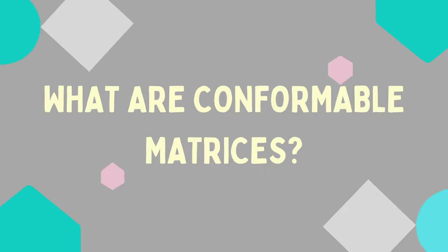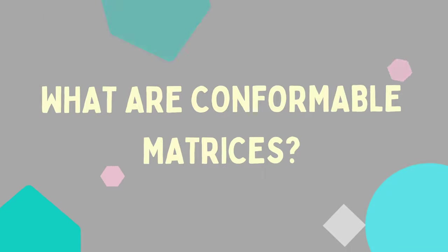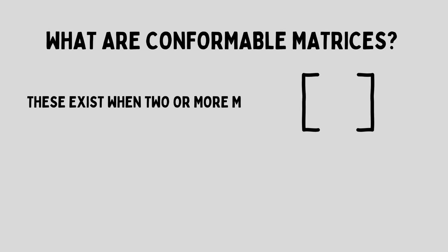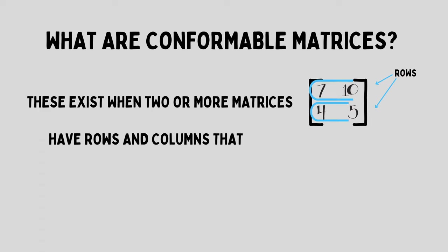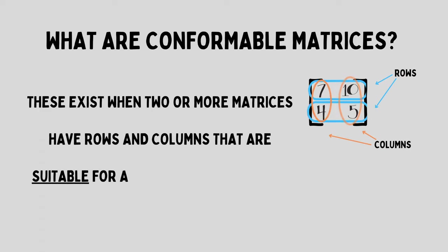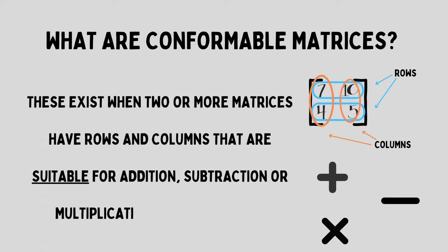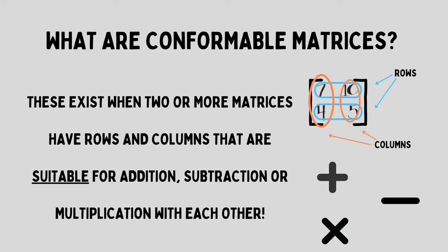What are conformable matrices? Conformable matrices exist when two or more matrices have rows and columns that are suitable for addition, subtraction, or multiplication with each other.